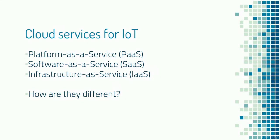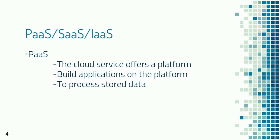There are different types of cloud services for the Internet of Things: Platform as a Service, Software as a Service, and Infrastructure as a Service. In Platform as a Service, the cloud provider offers an application framework where you can write scripts or programs in different languages to process data stored on the cloud or accumulated from the device.